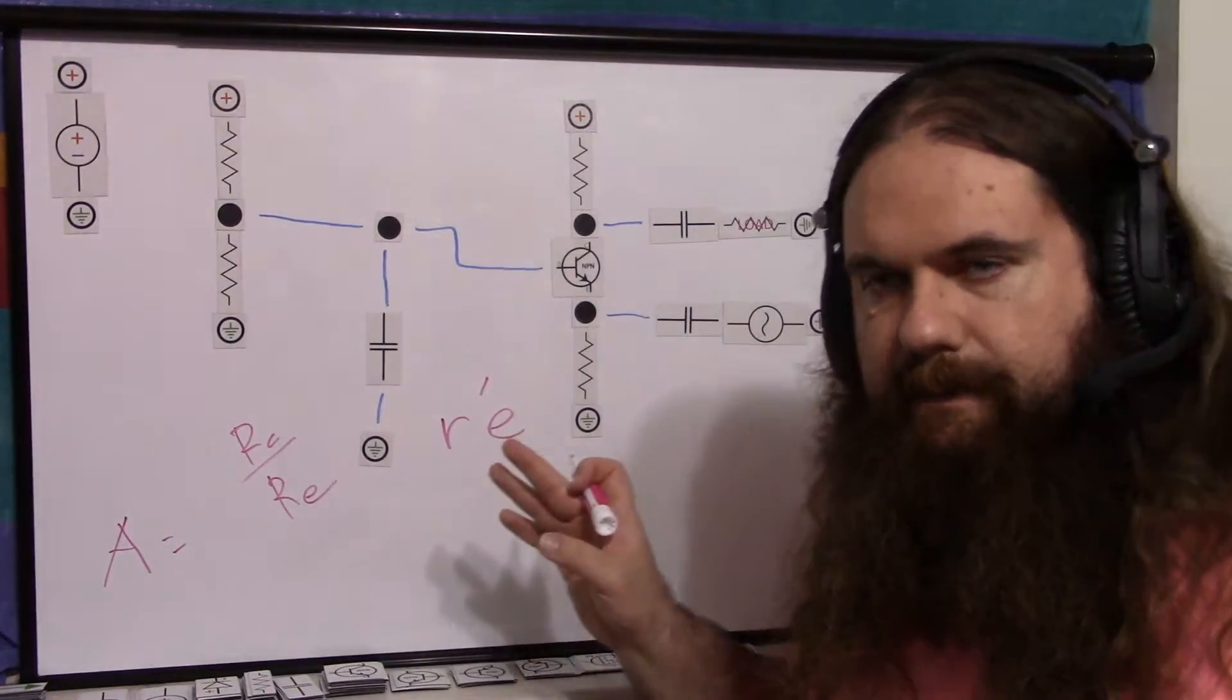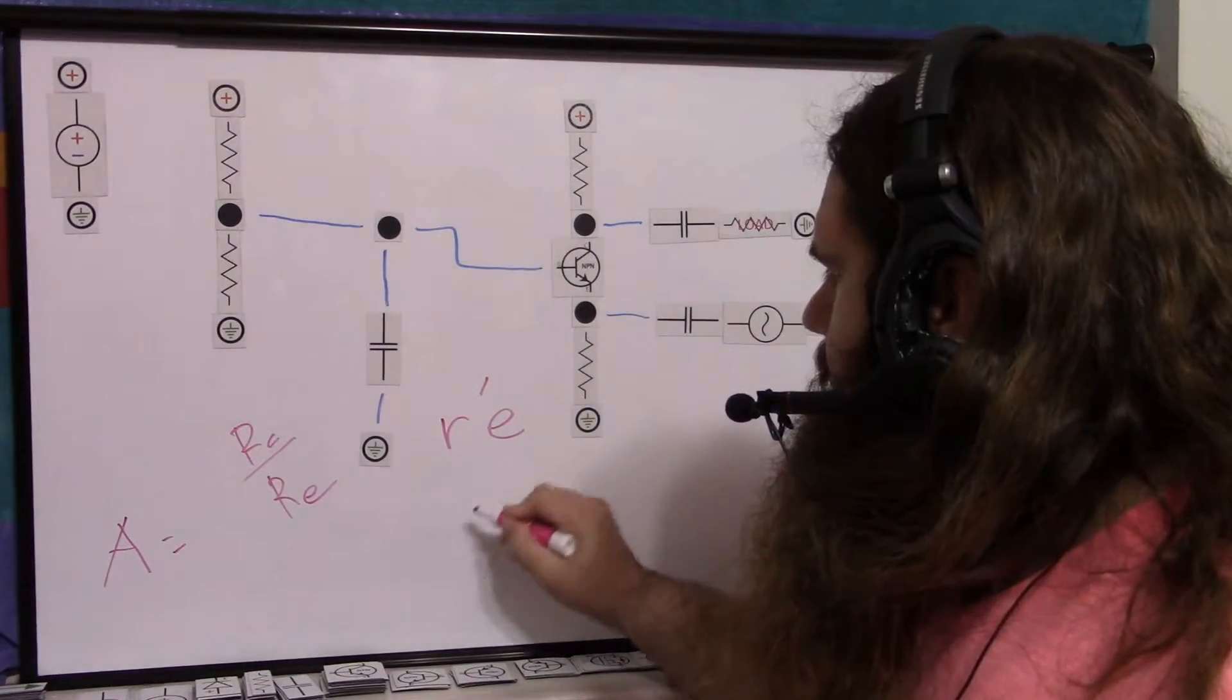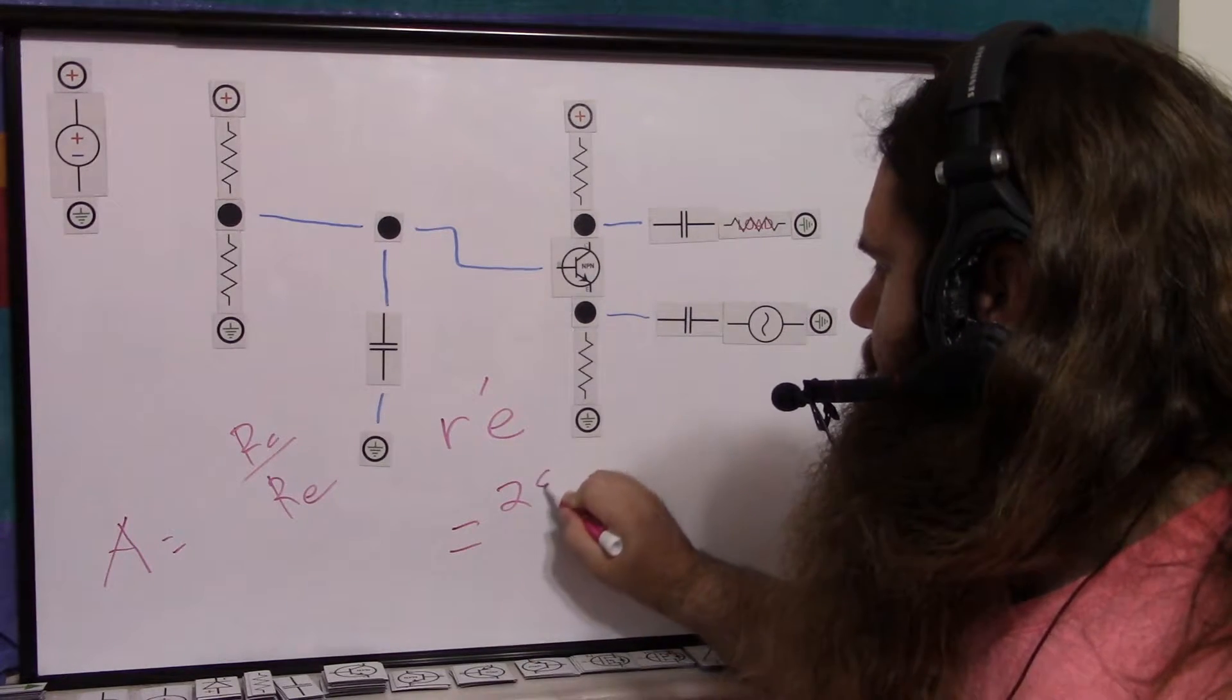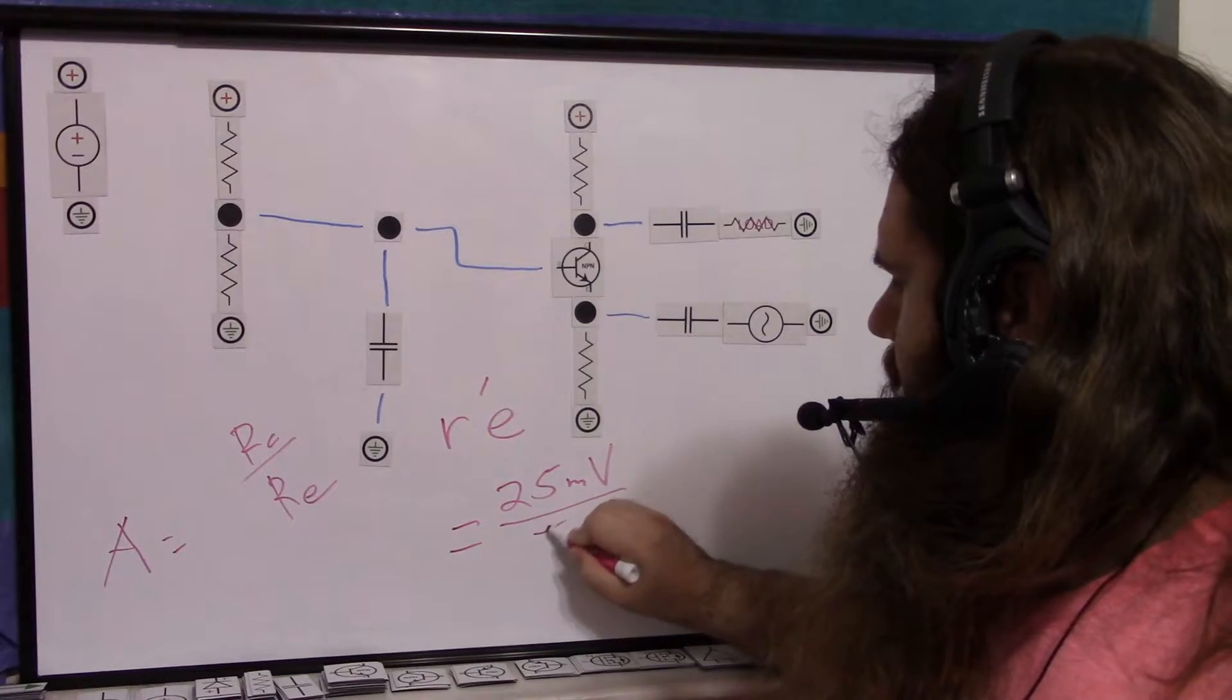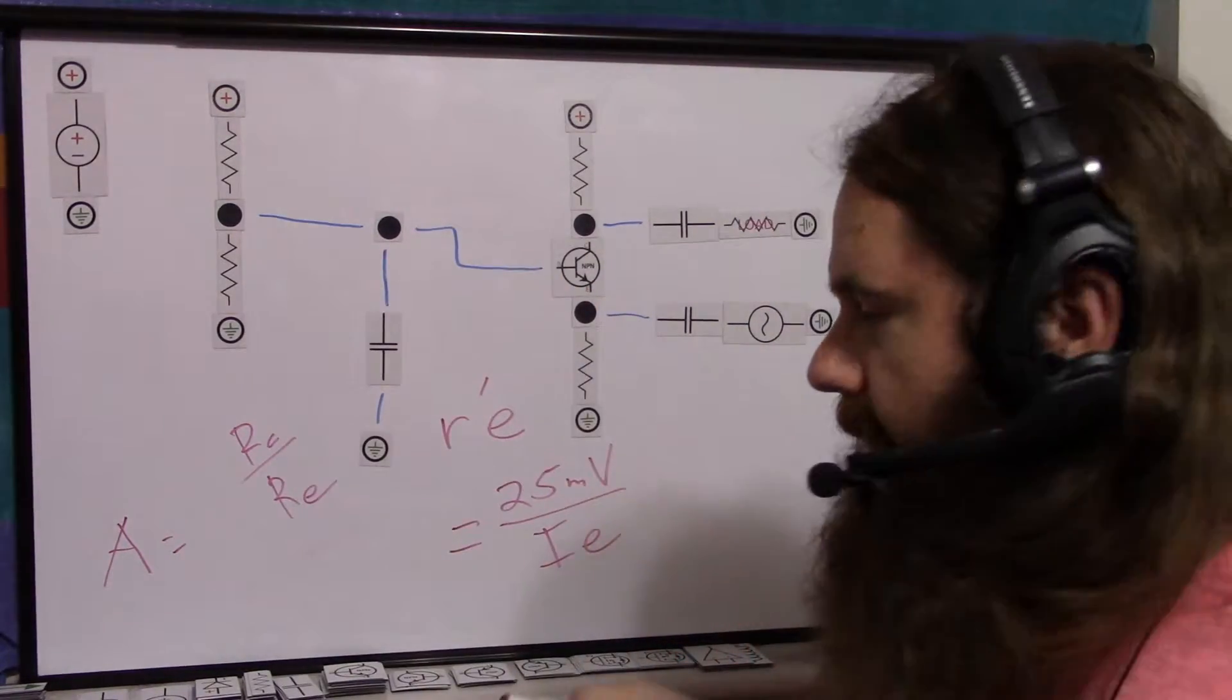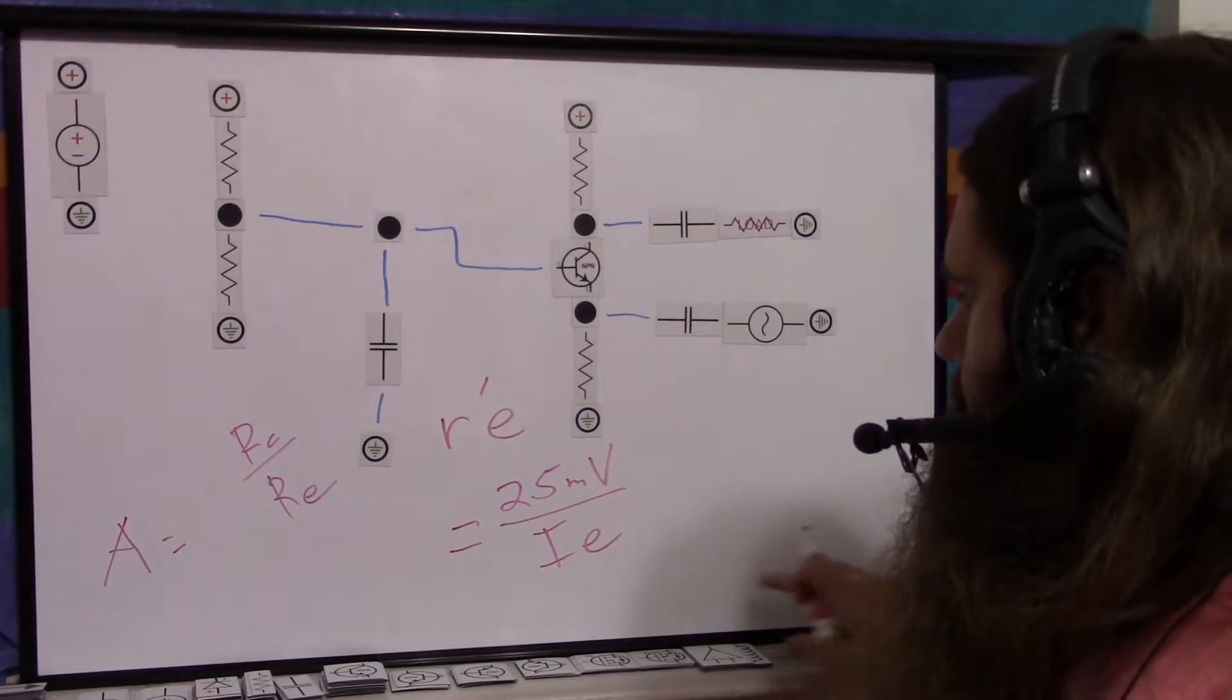There's some fancy math people do using the laws of electronics. And this RE, r apostrophe e, roughly comes out to 25 millivolts over the emitter current. It just is. There's a lot of calculus. Let's not worry about it. So 25 millivolts over the emitter current.